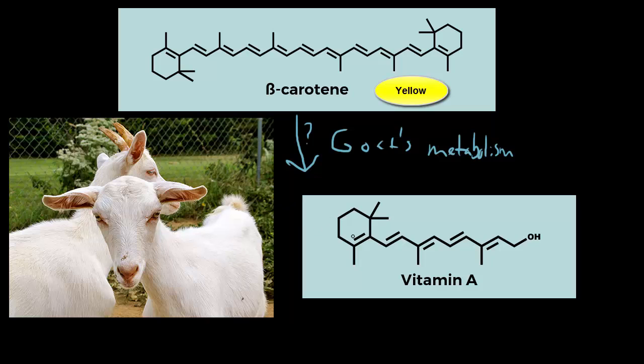And for those who are keen amongst you, you may notice that vitamin A and beta-carotene look pretty similar. In fact, all we did for this compound was just clip it in half. A vitamin A is just half of a beta-carotene compound. So all goats' digestive systems are doing is breaking that beta-carotene in half.